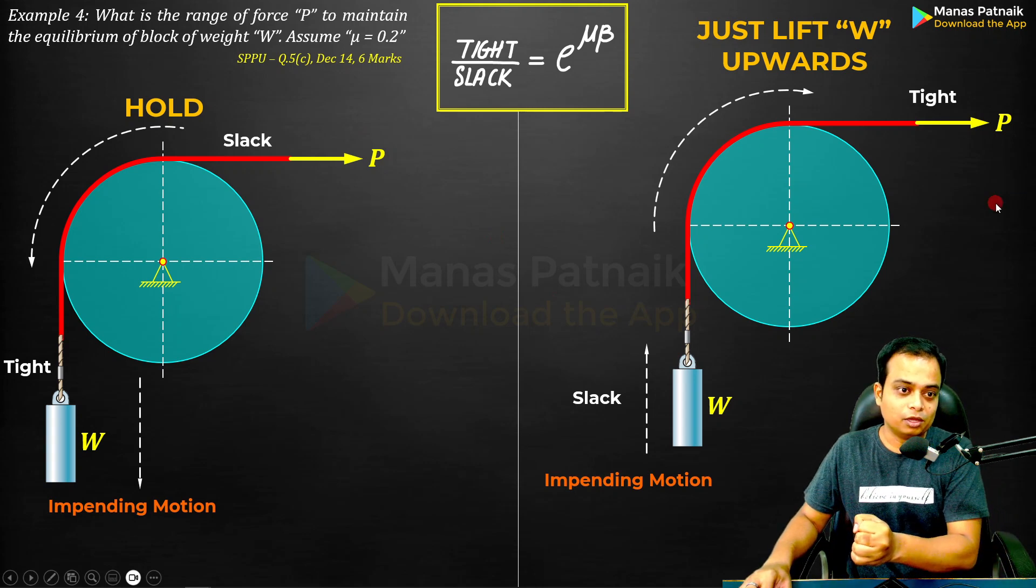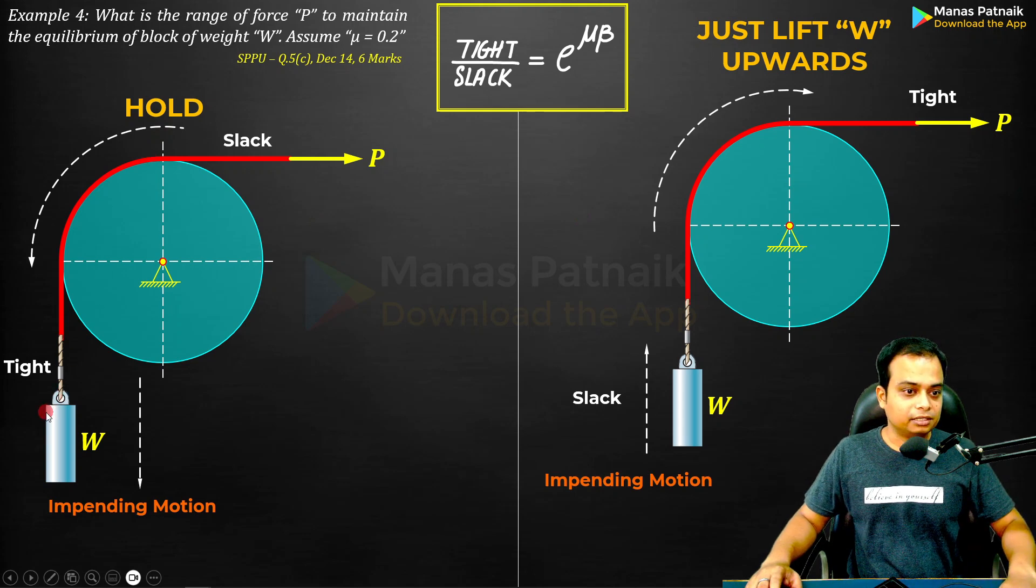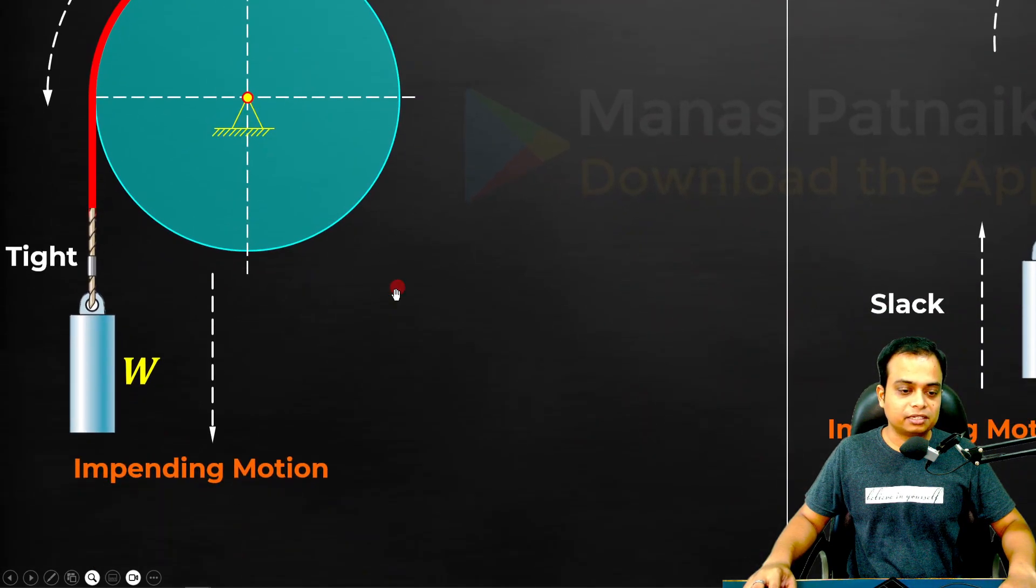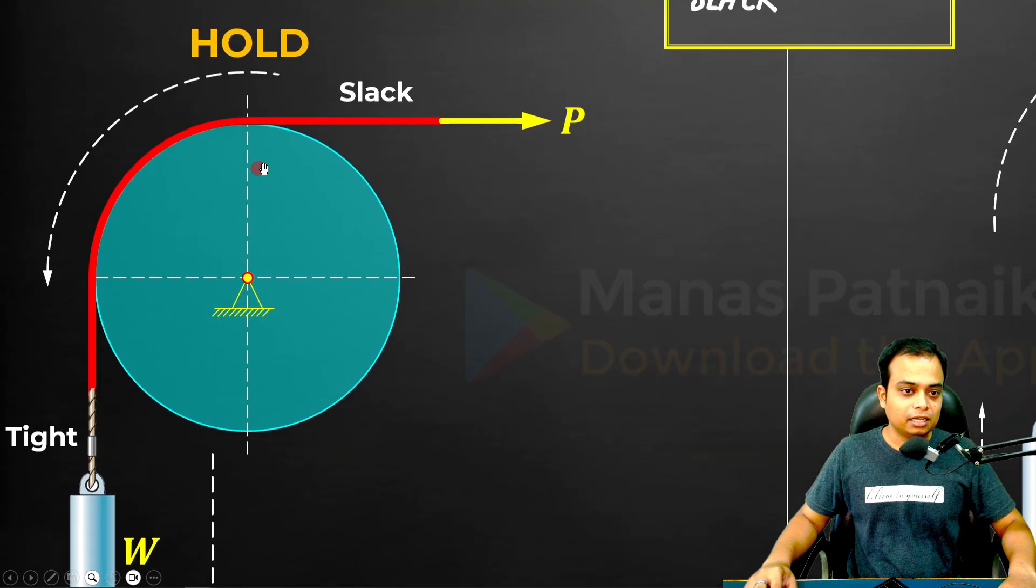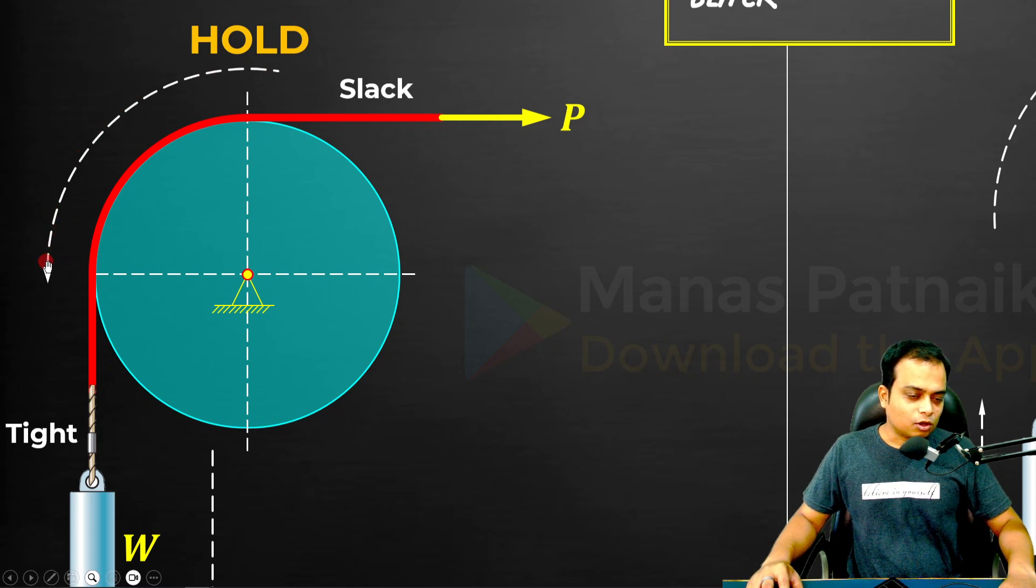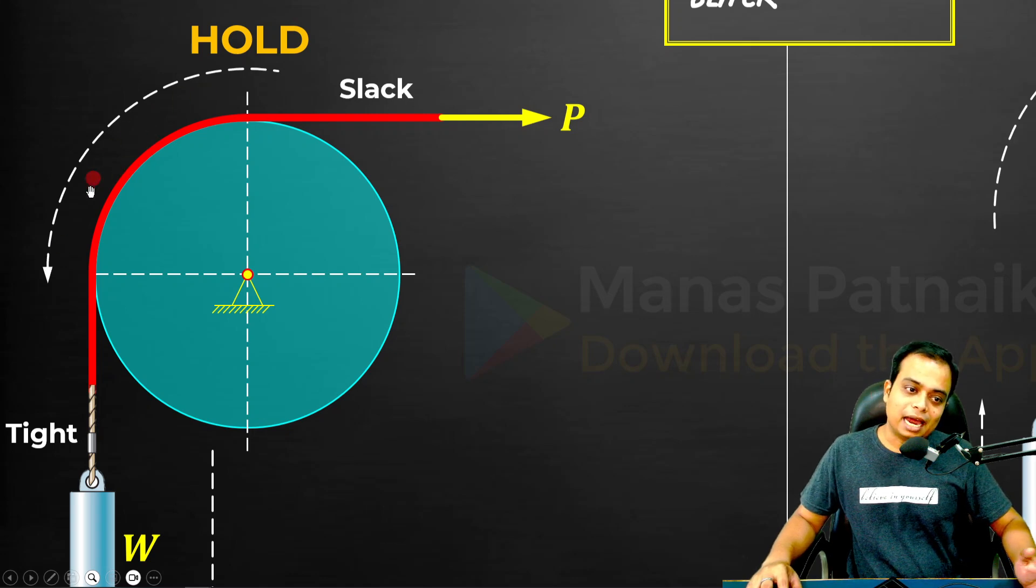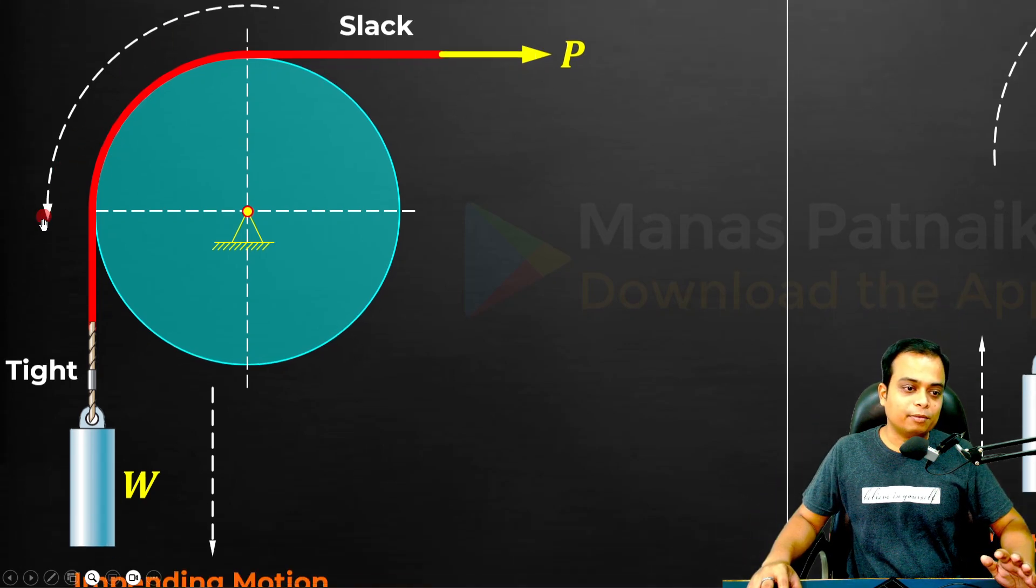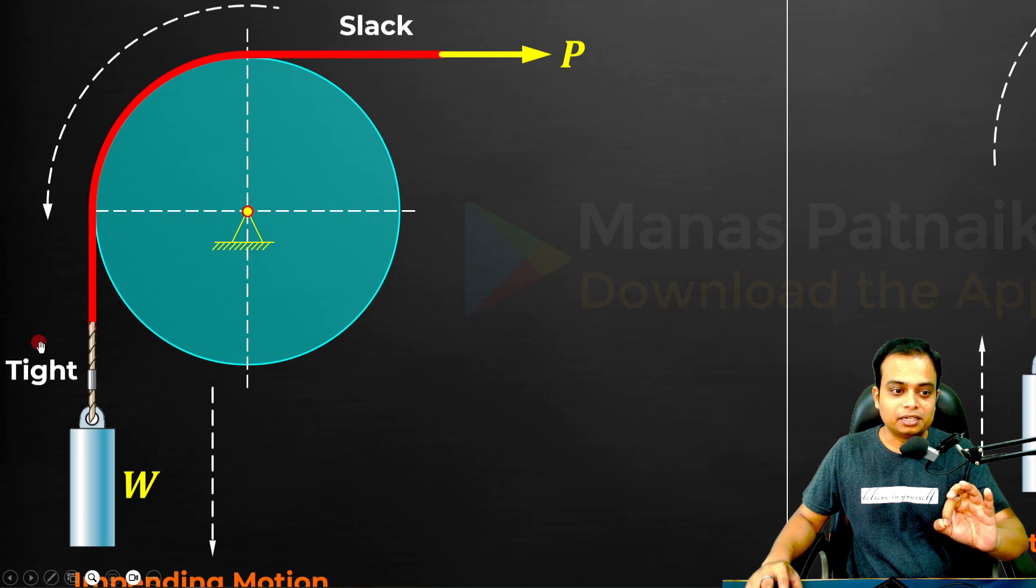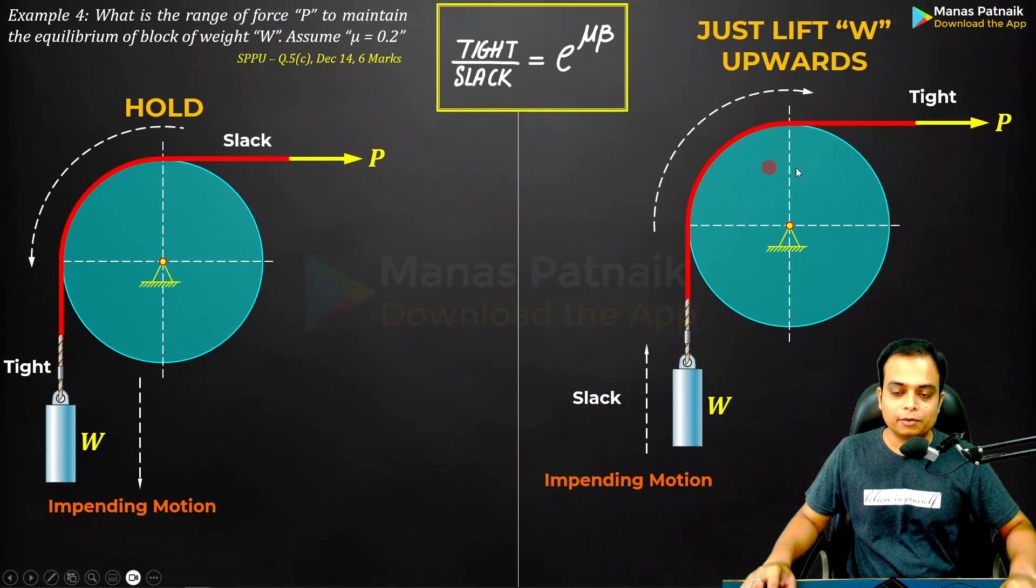You know the case of hold very well. We always go for the natural tendency. As far as natural tendency is concerned, the impending motion of this block W will be in the downward direction. In that case, this rope or cord will be moving slightly anticlockwise. It won't move but it will have a tendency to impend in the anticlockwise. Always remember wherever you see the arrowhead, that's the tight side, and the other one, the tail, corresponds to the slack side.